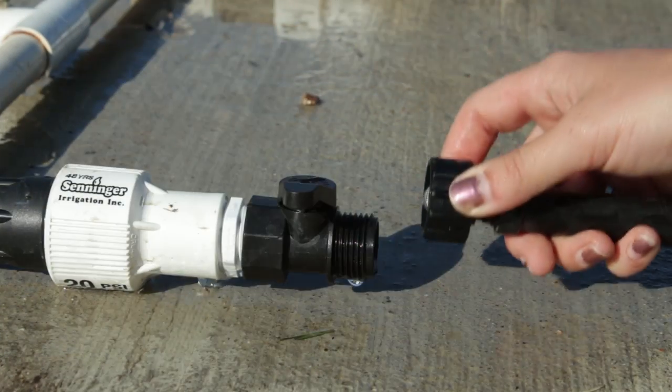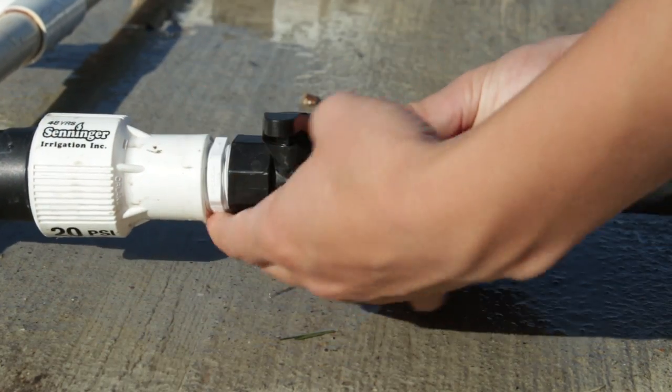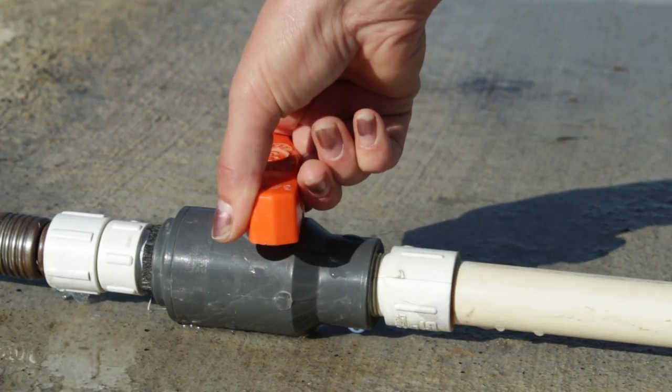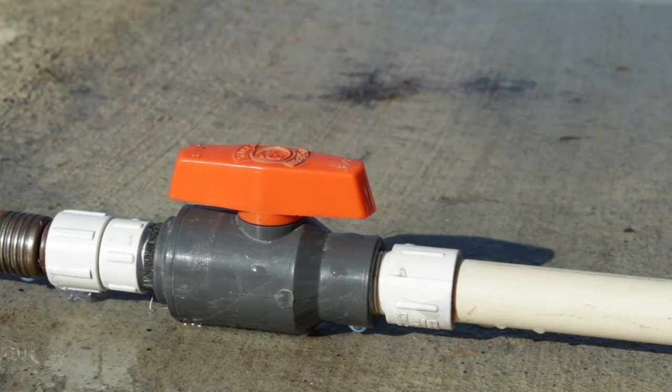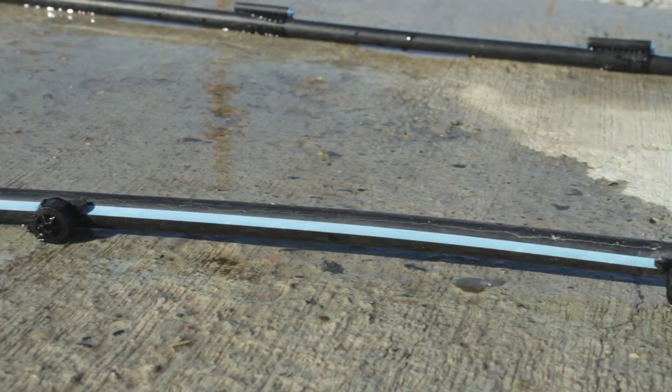To begin, connect the segment of drip hose to a water supply. Next, turn on the water and allow it to flow through the system. Wait until all air has exited the hose and it pressurizes.